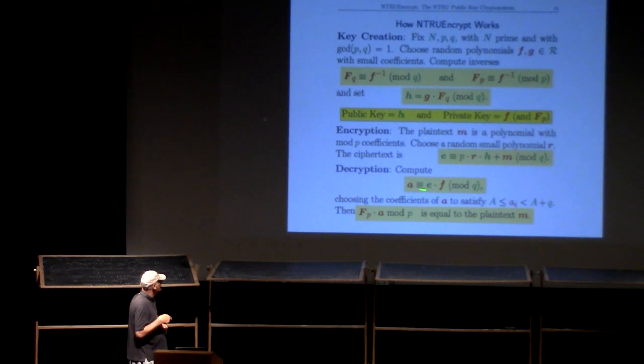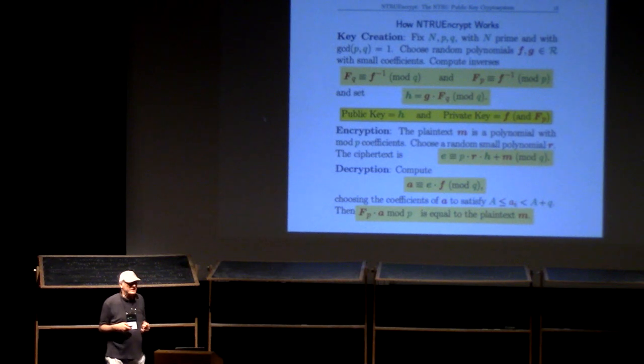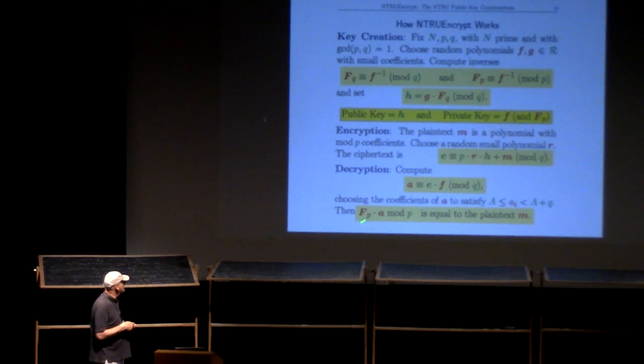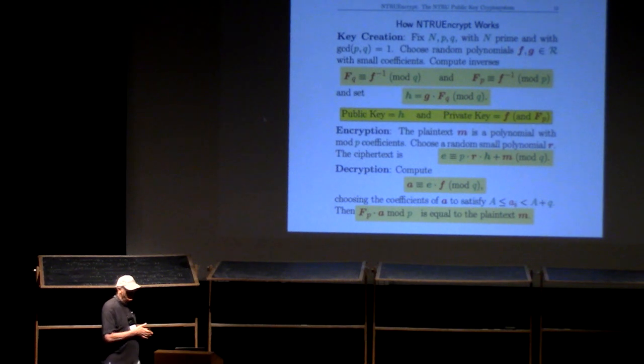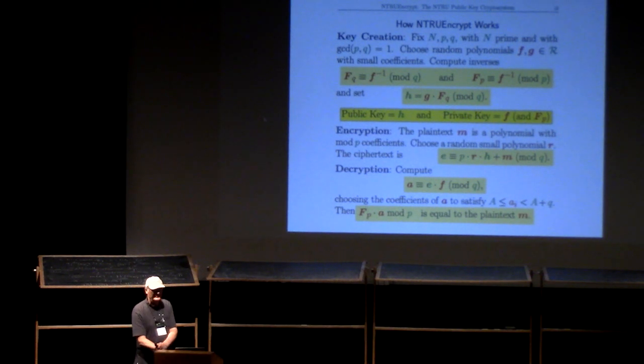To reiterate, Alice has multiplied the ciphertext by her private f to get... And reduce mod q, but then she lifts the coefficients to integers in a particular interval. So, now A is actually a polynomial with integer coefficients. She multiplies it by this capital F sub p, which you'll remember was the inverse of little f mod p, and reduces the coefficients mod p, and lo and behold, she'll get M back.